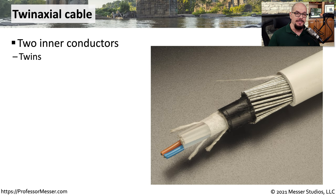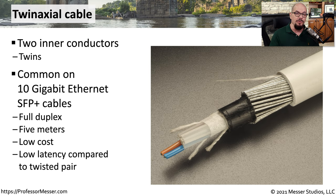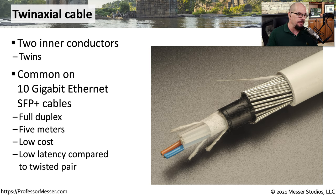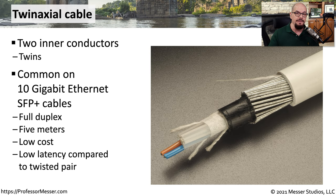Twinax is similar to coax, except instead of having one single conductor inside the cable, there are two separate conductors — the twins in the Twinax. This is the type of cable you would commonly see associated with 10 gig ethernet over copper, specifically using SFP transceivers. This allows for a full duplex connection because you have two connections: one for send and one for receive. It does have a limited distance of about five meters when used with 10 gig ethernet, but because it is a copper cable, it has a relatively low cost compared to fiber connectivity and lower latency than twisted pair cabling.